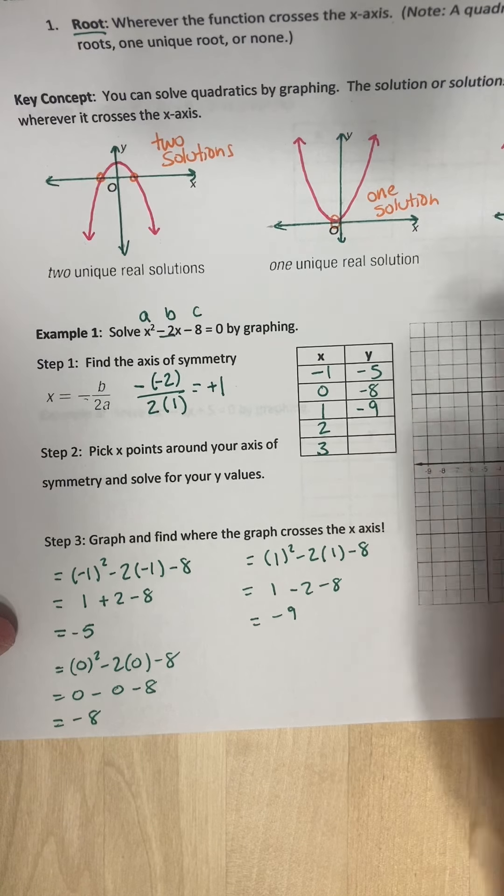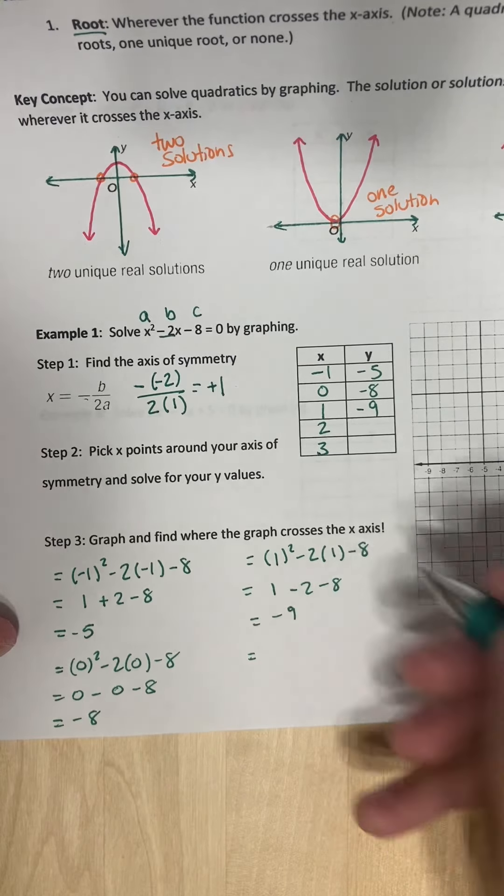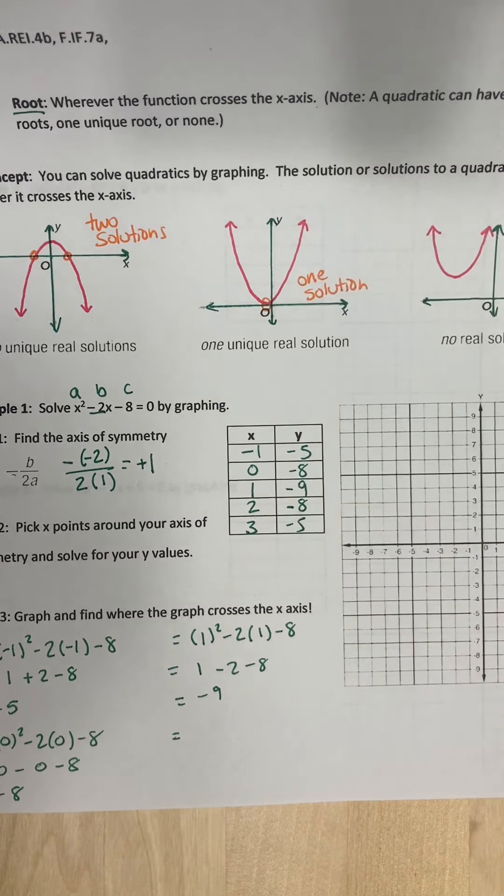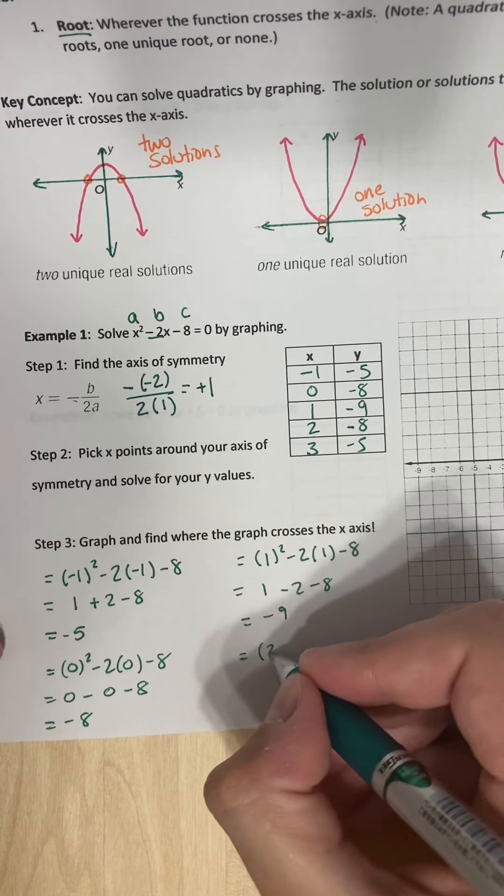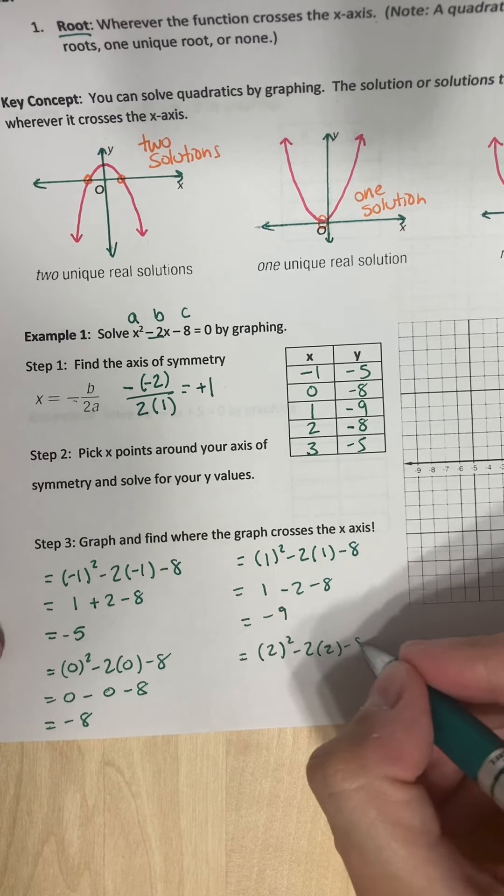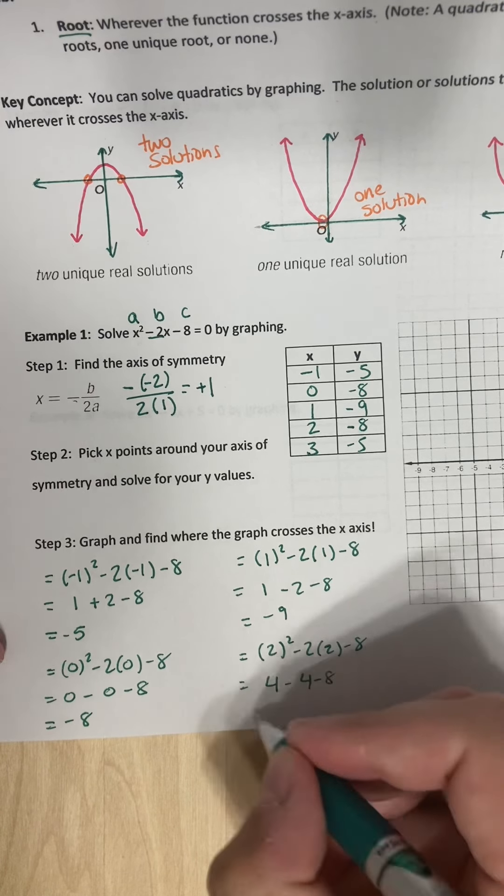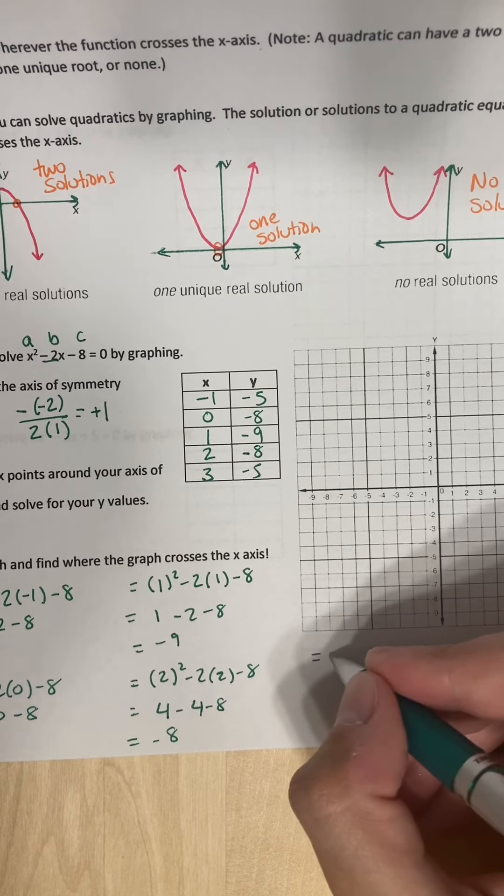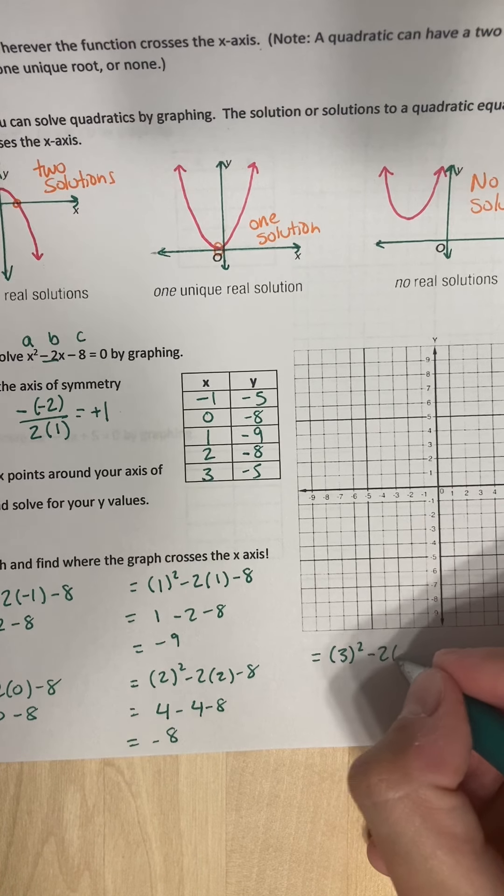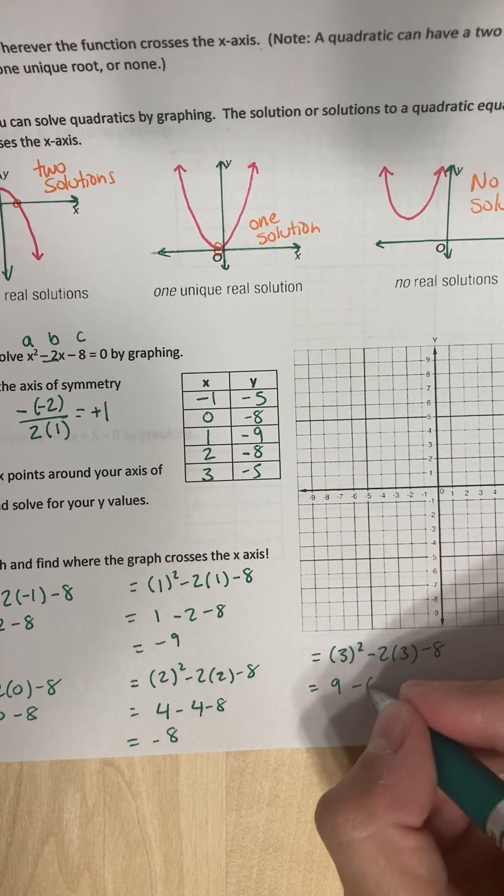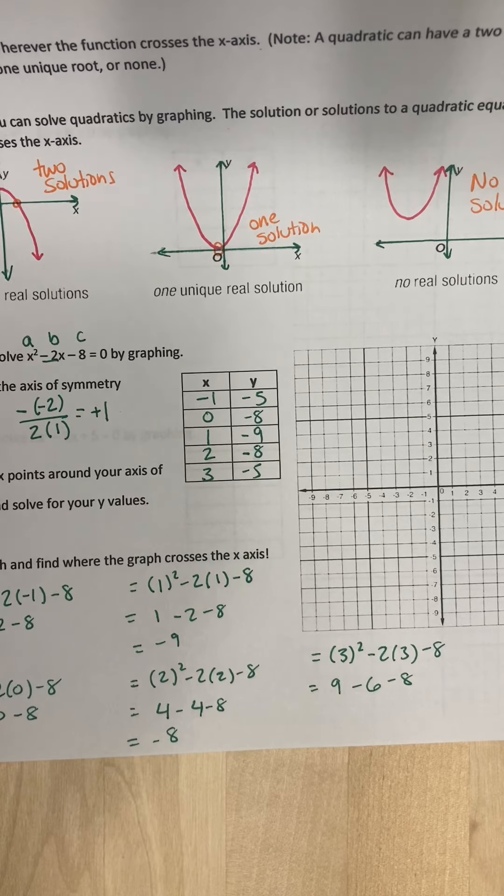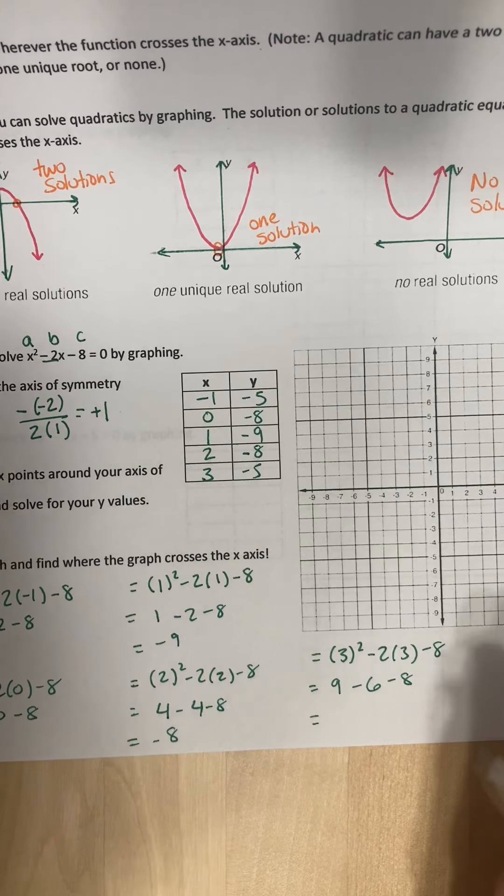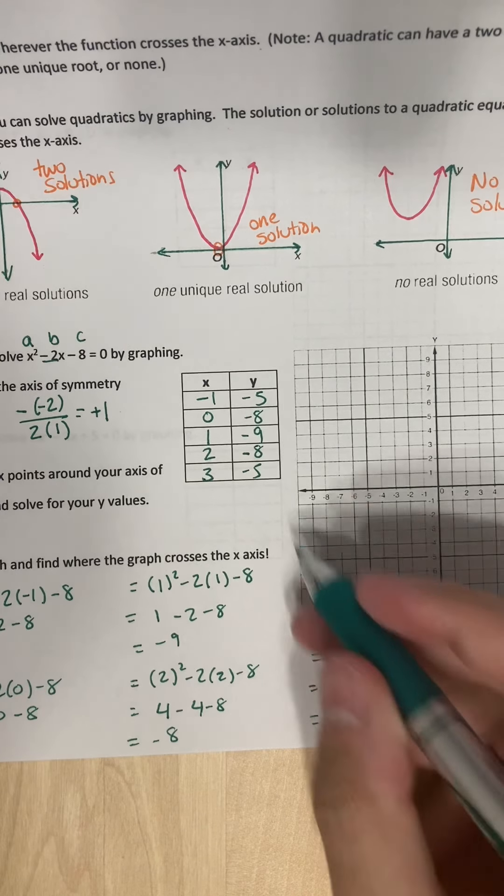And if you remember from last time, these values right here are going to be the same right here. But just to show you, so I already know that this is going to be negative 8 and negative 5, just because the parabola goes up one way and comes back the other way, right? But just to double check, let's plug in 2. Minus 2 minus 8. So we get 4 minus 4 minus 8, which turns out to be negative 8. And then let's do 3. So I'll have 3 squared minus 2 times 3 minus 8. You get 9 minus 6 minus 8. And what we end up getting is negative 5. Perfect.